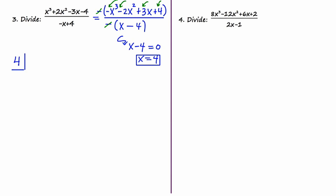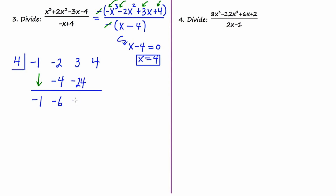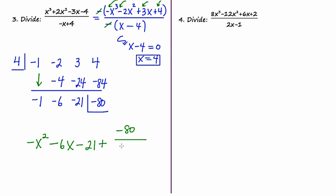The first term drops down. Multiplying 4 times negative 1 gives negative 4. Adding gives negative 6. Multiplying 4 and negative 6 gives negative 24. Adding gives negative 21. Multiplying gives negative 84. Adding gives negative 80, which I put in its own cubby. Interpreting my answer — the degree of the dividend was 3, so the degree of my answer is 2. The result is negative x squared minus 6x minus 21 plus negative 80 over the divisor x minus 4. That's how you deal with a divisor that has a slope other than 1.